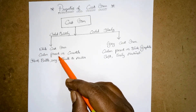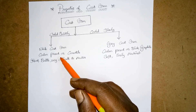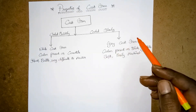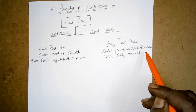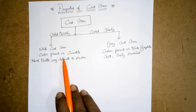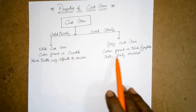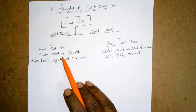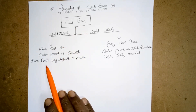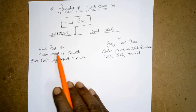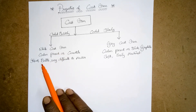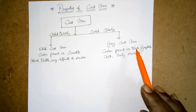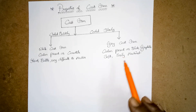Under white cast iron, carbon is present as cementite, whereas in grey cast iron, carbon is present as flake graphite. Because carbon is present as cementite, white cast iron is hard, brittle, and very difficult to machine. Whereas grey cast iron is soft and easily machinable.